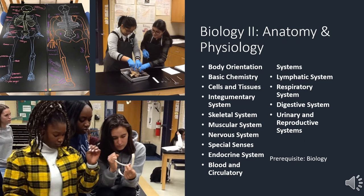Anatomy and Physiology introduces students to the structures and functions of the human body. The course focuses on each body system and the medical terminology associated with each system. This objective will be met through extensive laboratory investigations, including dissection of a representative mammal. These studies will provide an understanding of the interdependence of human body systems and provide a solid base for further studies and/or healthcare-related career choices. It is recommended that students have a minimum grade of C in previous science courses and have taken chemistry. The prerequisite for Anatomy and Physiology is biology.